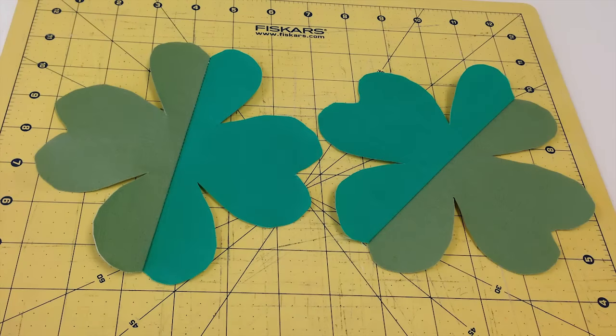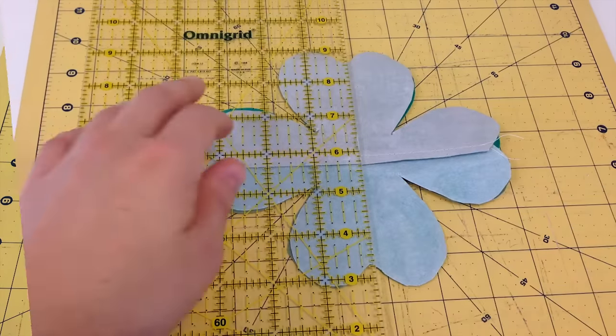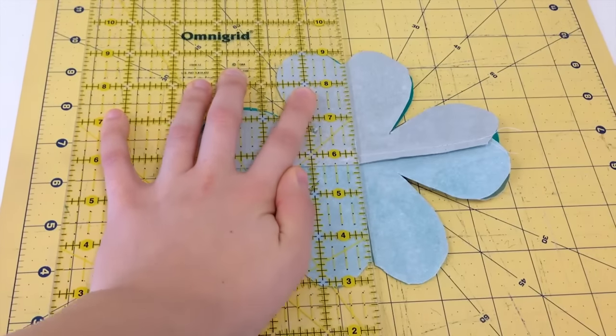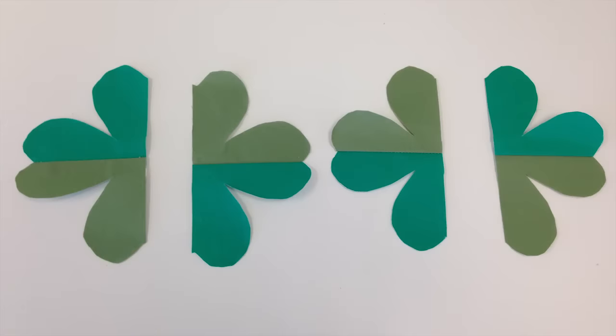Press each seam to opposite sides. Now, place your 4-leaf clovers right sides together and cut in half again and sew together. Make sure to match up seams.